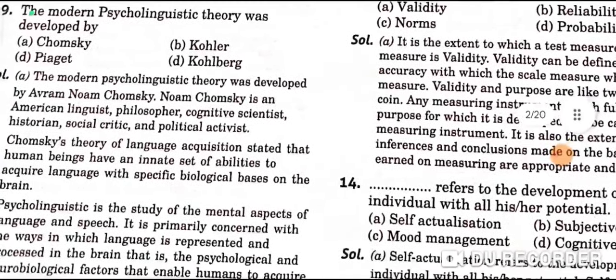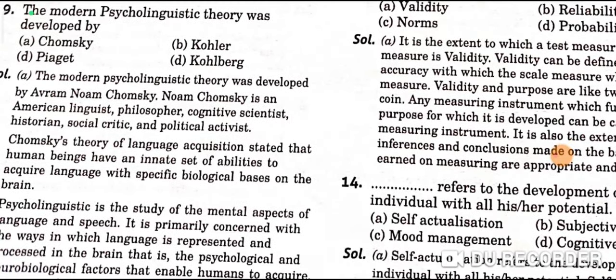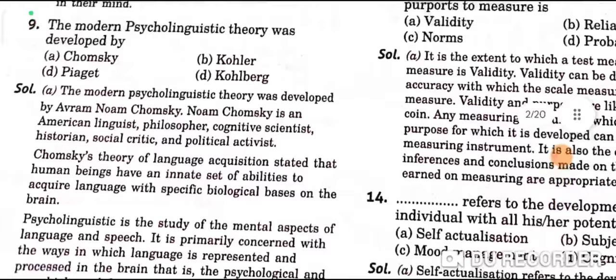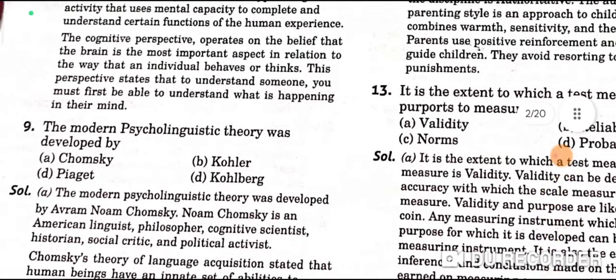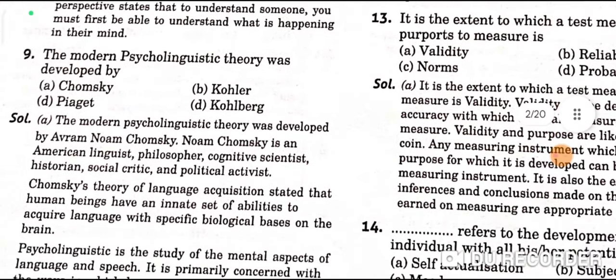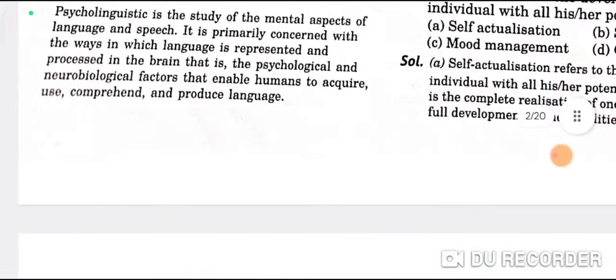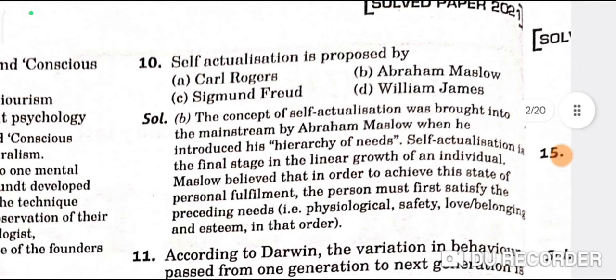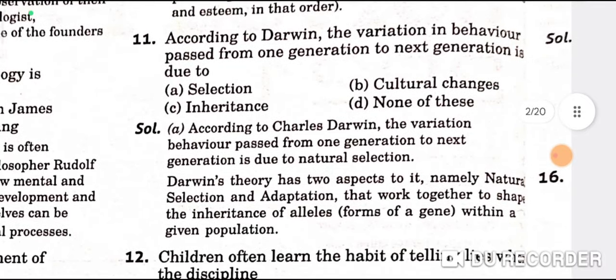Question 9: The modern psycholinguistic theory was developed by Chomsky — A is the correct option. Question 10: Self-actualization is proposed by Abraham Maslow — B is the correct option.